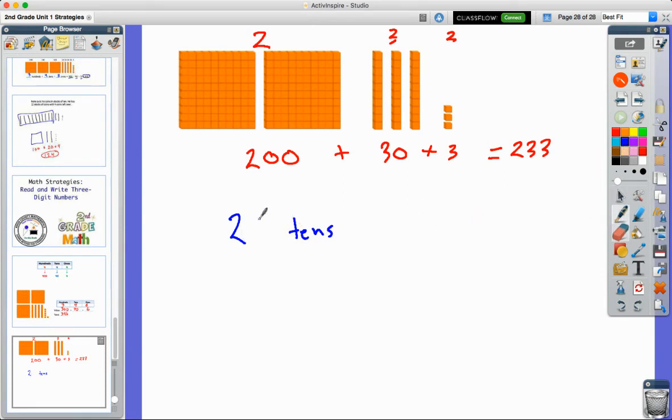So that would be 20 tens plus three more tens, and then plus my three ones. So we could look at this in different ways. So 200 is the same thing as looking at 20 tens. So we'd actually have a total of 23 tens and three ones, and that would still equal 233.